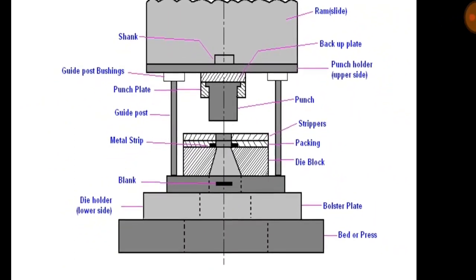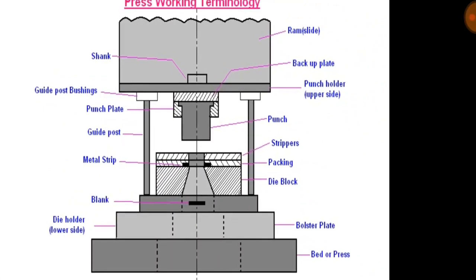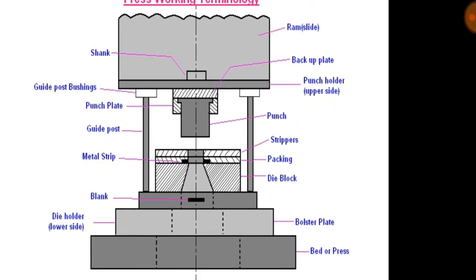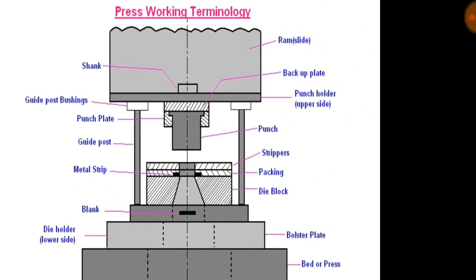Punch plate: the punch plate or punch retainer fits closely over the body of the punch and holds it in proper relative position.